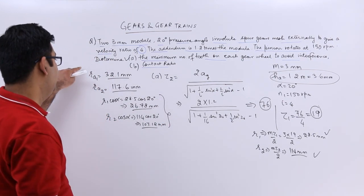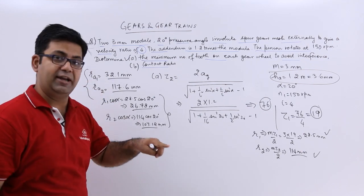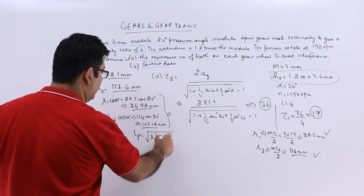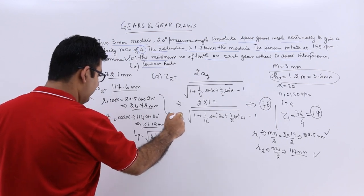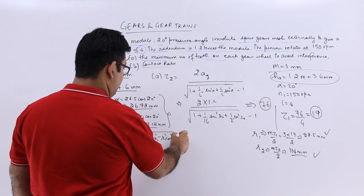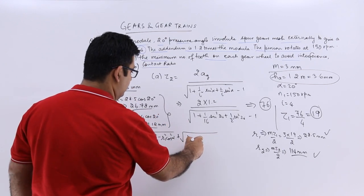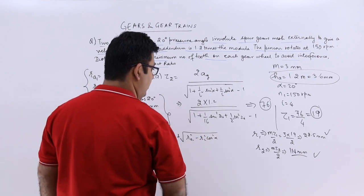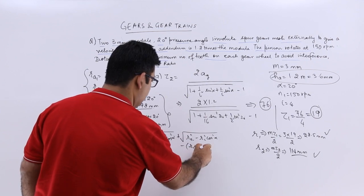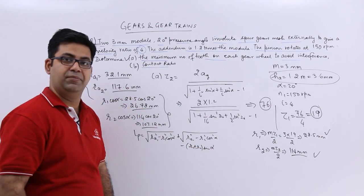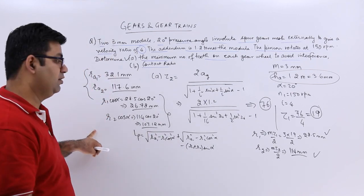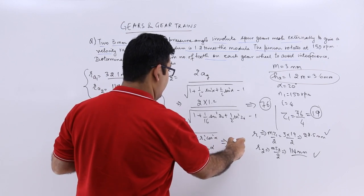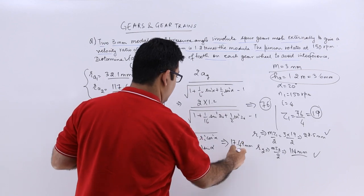These are the values which we will use to calculate Lp. Lp is under root Ra1 square minus R1 square into cos square alpha plus under root Ra2 square minus R2 square cos square alpha. You plug in all the values which are in this particular table and this will give you an Lp of around 17.5 millimeters.